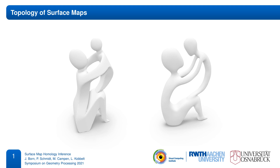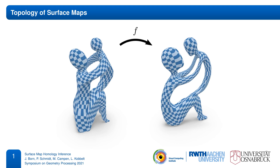Many methods in geometry processing deal with maps between surfaces. Of particular importance are continuous bijective maps, or homeomorphisms. They define a geometrical correspondence of surface points, but they also imply a topological correspondence.